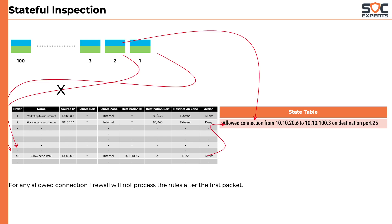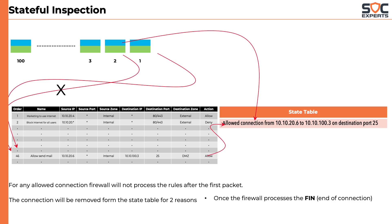So, if the firewall allows a connection and puts it into the state table, when does it remove the connection from the state table? It does so for two reasons: first, when the firewall processes the FIN packet, which indicates the end of the connection; and second, when the firewall sees a reset in the connection.